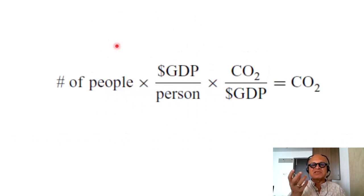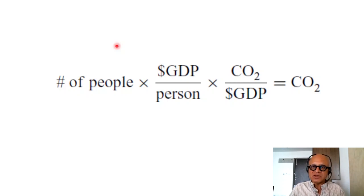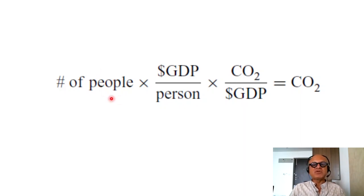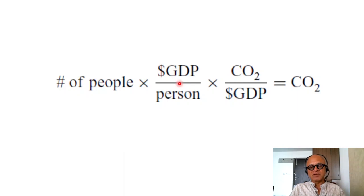One has to be aware of what's implicit and explicit in affluence and technology. Population can be misleading because reduced population doesn't necessarily mean reduced consumption. In fact, rich people are having fewer kids to give more wealth per child so they can consume more per child — so it's not always the way we imagine environmental impact from reduced population.